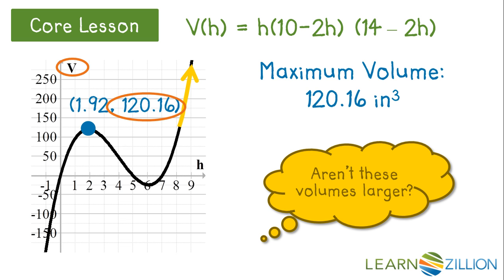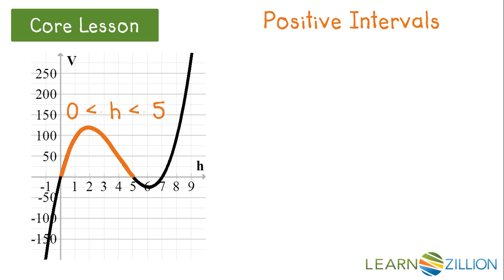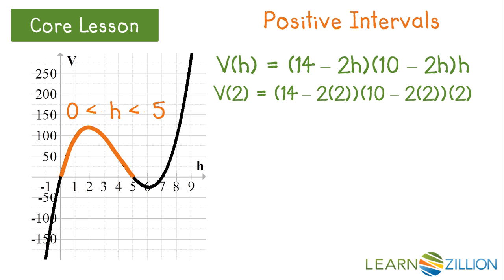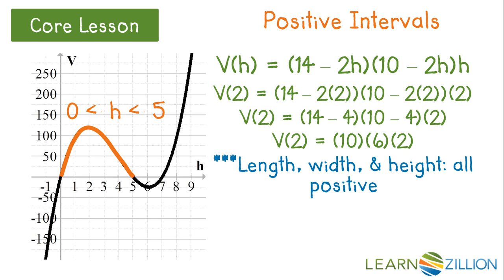But aren't these volumes larger than 120.16 inches cubed? Let's find out why we can't use these. Let's take a closer look at our positive intervals. Our first positive interval occurs between the values of 0 and 5. Let's select a number, such as 2, and plug it into our volume function. If we plug 2 in and follow our order of operations, we get that volume at a height of 2 inches is equal to the quantity of (14 minus 4) times the quantity of (10 minus 4) times 2, which equals 10 times 6 times 2. Notice that length, width, and height are all positive. By multiplying these values together, we get that the volume at a height of 2 is 120 inches cubed. Because the volume came out positive and all of our dimensions are positive, we can use any value between 0 and 5 for the height of the box.